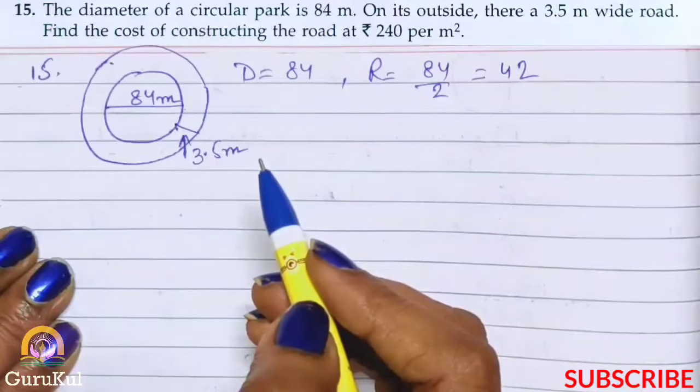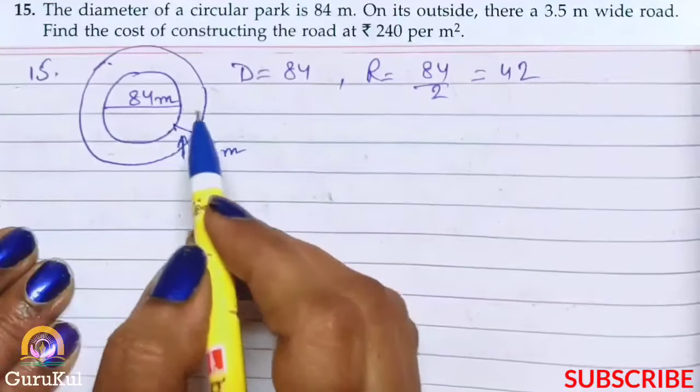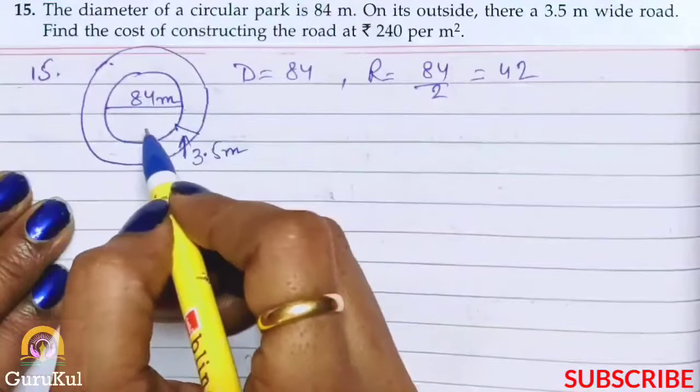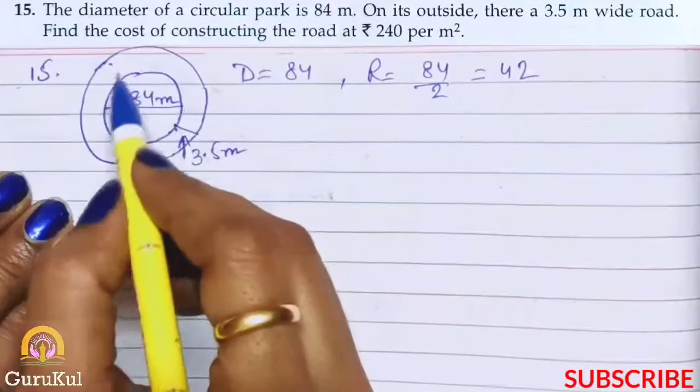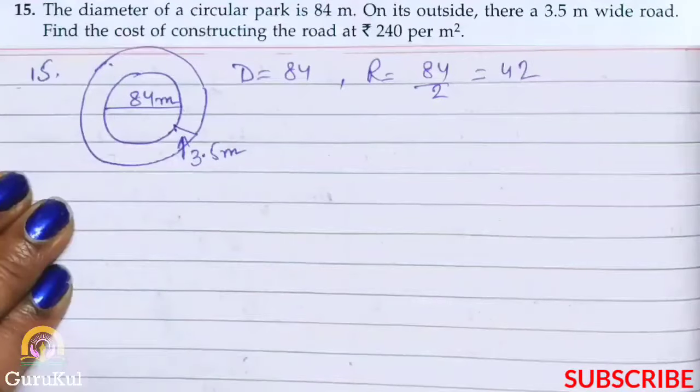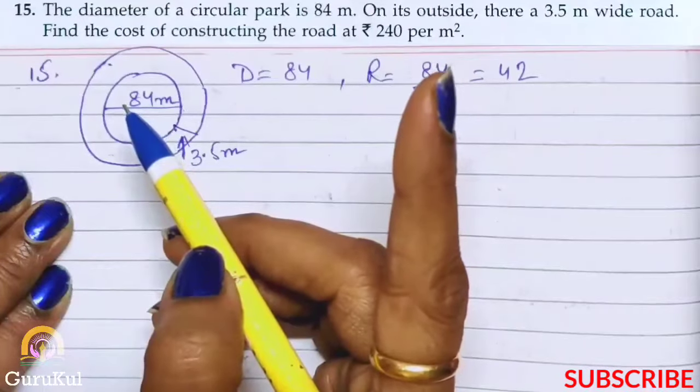Now we have to find the cost of constructing the road at rupees 240 per meter square. So we will deal with that later. Now see, this inner circle is the actual park. We got its radius and diameter is also known. Now this is the outer one. We have to find the costing per meter square, meaning we have to find the area. So what will be constructed is the road, this shaded part.